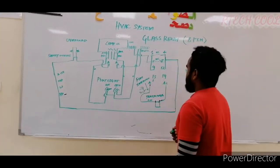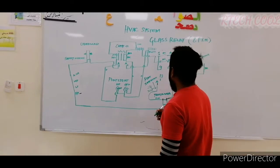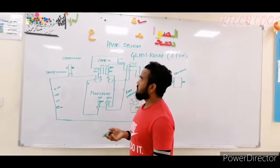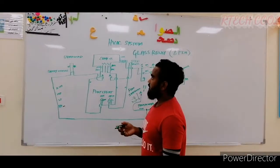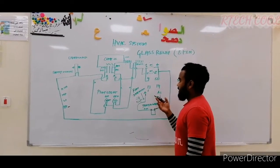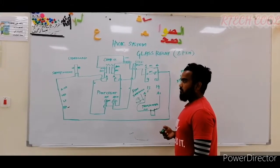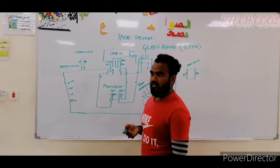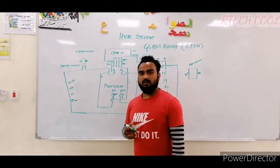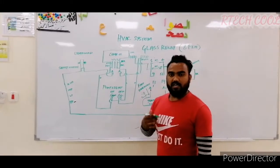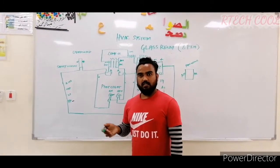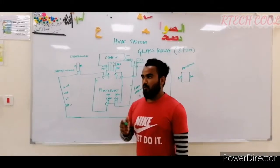We will start with this relay. We have multiple uses of this relay. We can use it as a fire alarm interlock, we can use it as a light indication, we can use it as a trip indication — whatever we want. This relay has multiple uses.